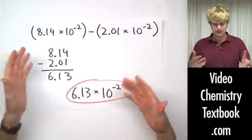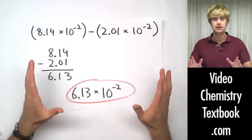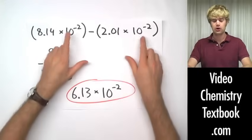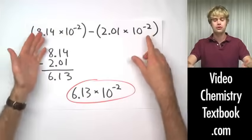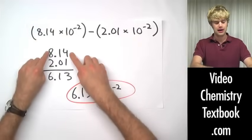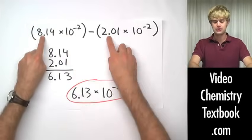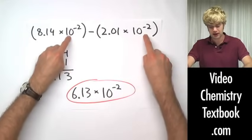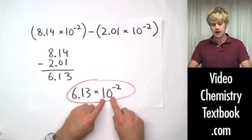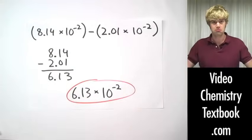Here's a subtraction problem. I'm not even going through the whole thing because I think it's so easy. I just look at the powers here. They're the same. So all I have to do is the subtraction. 8.14 minus 2.01. There's the answer. And then I take 10 to the negative 2nd. I pull it down here and reuse it in my final answer. I'm done.